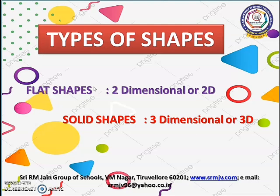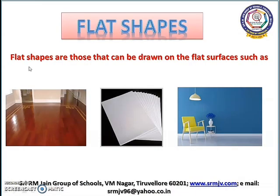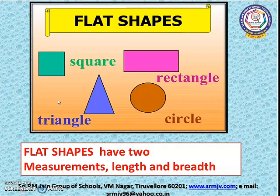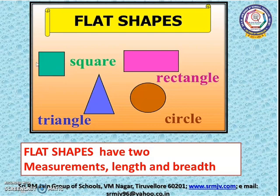Now let's look at the flat shapes. Flat shapes are those that can be drawn on flat surfaces such as the floor, paper, and wall. You can see different forms of flat shapes in this picture. They are square, rectangle, triangle, and circle. Flat shapes have two measurements: length and breadth.